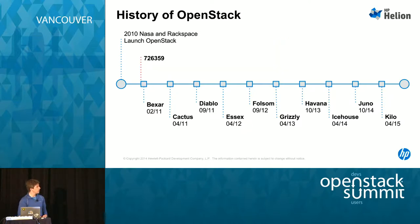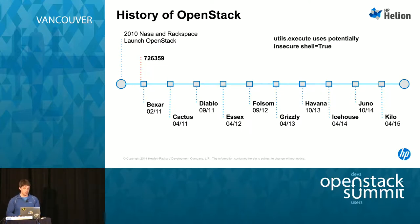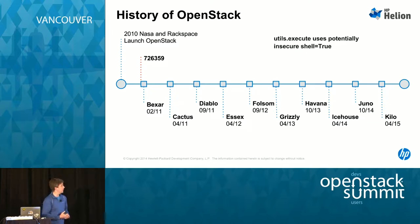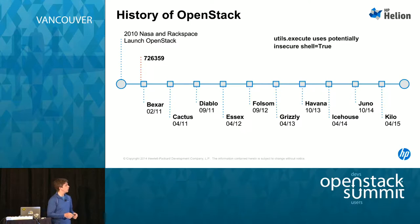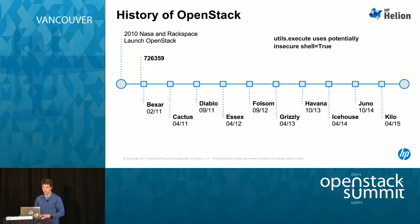The earliest security vulnerability I could find was bug 726359 — it was in Nova, and it was a really common, simple vulnerability that could, with some bad configuration or some other failure in security, compromise everything going on on a single node.